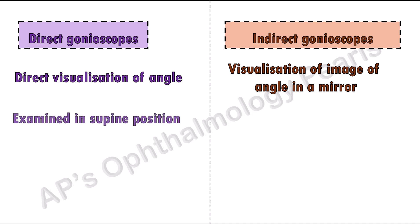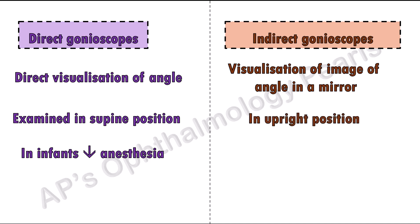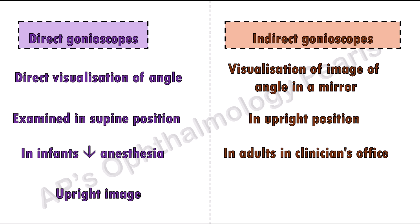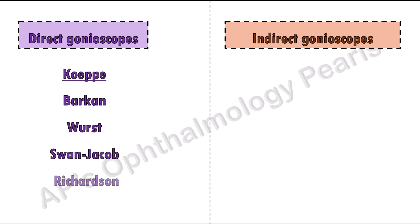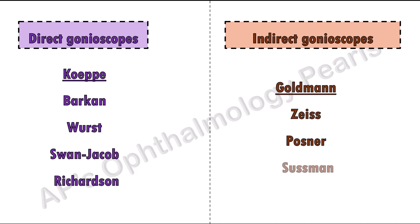Direct gonioscopy is performed in a supine position and is commonly used in infants under anesthesia, whereas indirect gonioscopy is performed in an upright position at the slit lamp in adults in the clinician's office. These are the direct goniolenses, of which the Koeppe is the prototype, and these are the indirect goniolenses, of which the Goldman is the prototype.